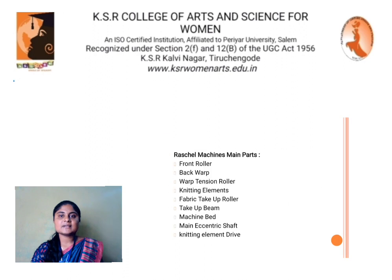Raschel Machine Main Parts: front roller, back warp, warp tension roller, knitting elements, fabric take-up roller, take-up beam, machine bed, main eccentric shaft, and knitting element drive.